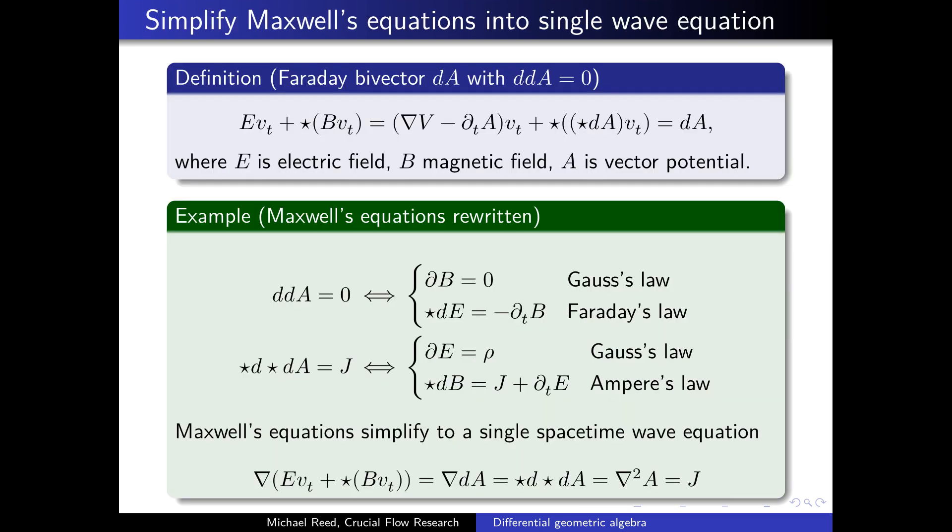Let's think about how we simplify Maxwell's equations into a single wave equation. We start by taking the definition of a Faraday bivector dA with d dA equal to zero. As we know, if we have something like dA, d dA has to equal zero just from linear dependence and exterior algebra. We define the Faraday bivector dA as E times VT plus the complement of B times VT, where E is electric field, B is magnetic field, and A is vector potential.